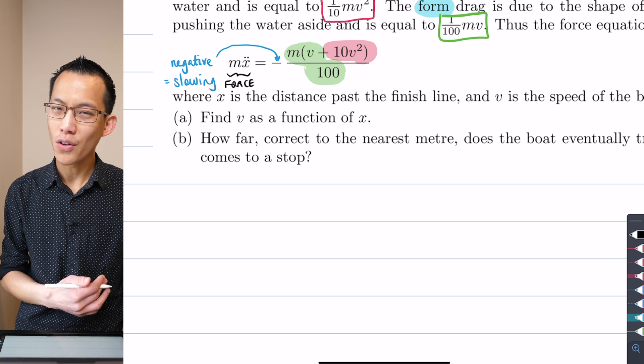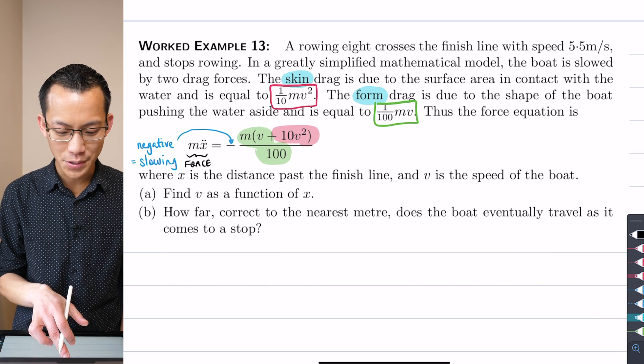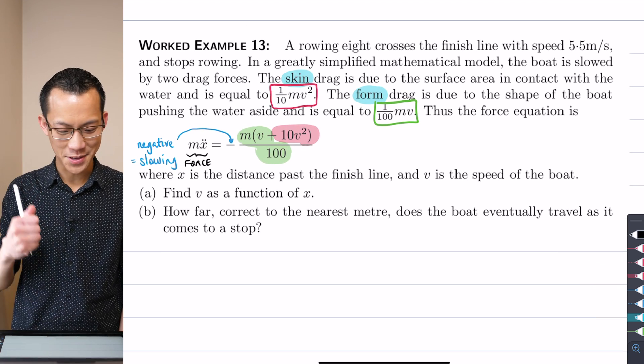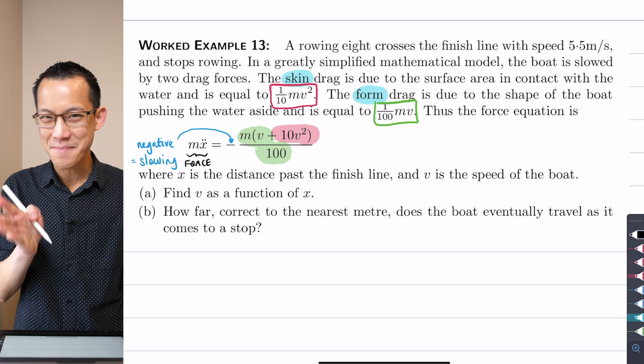Mass is just a constant that I can divide through. Presumably the boat is not shedding people out the side as they go through, so I'm going to treat mass as constant.